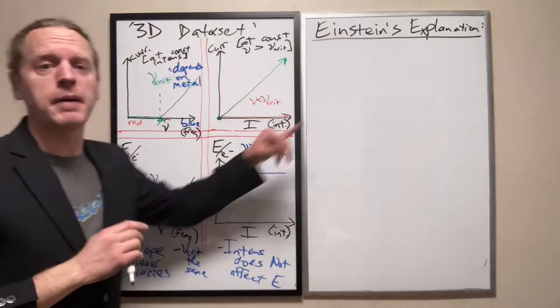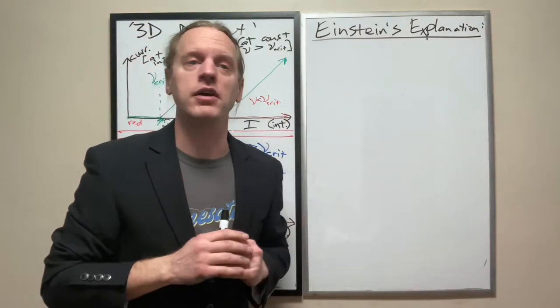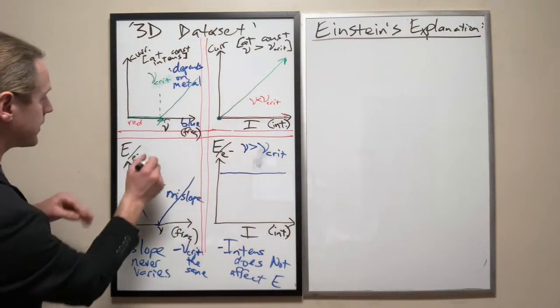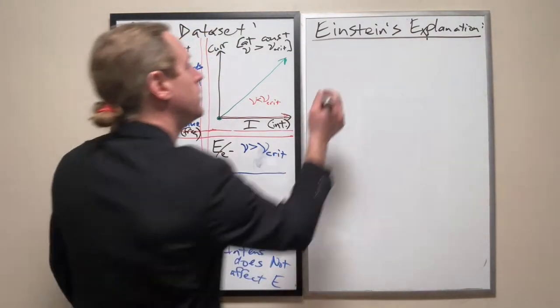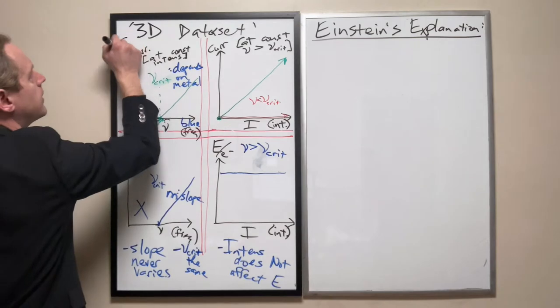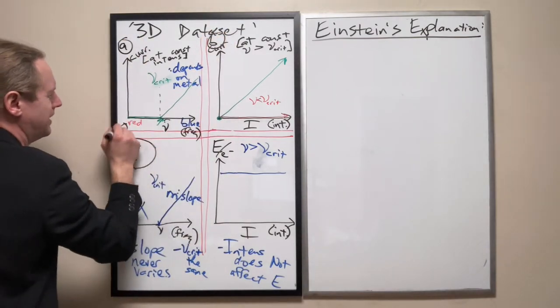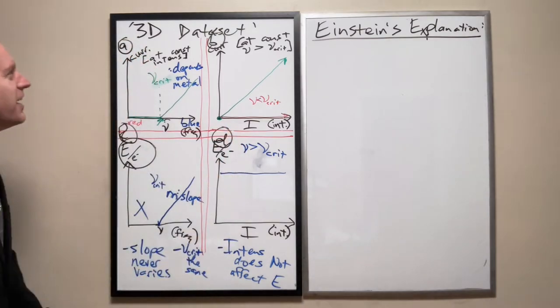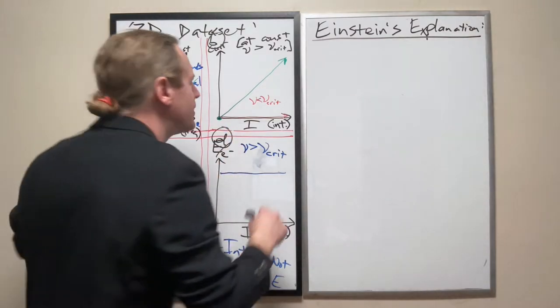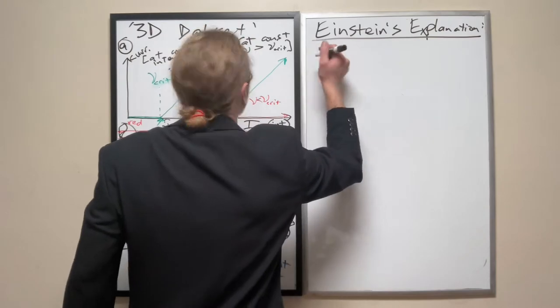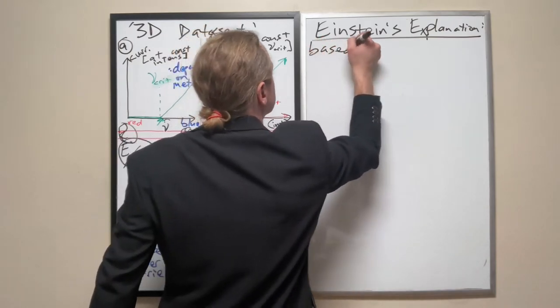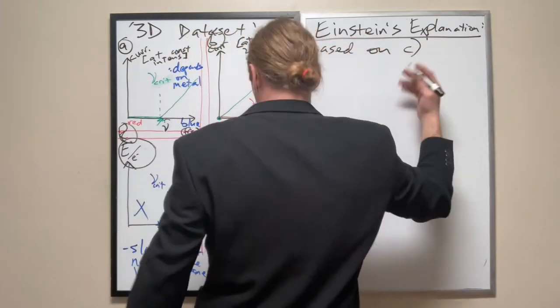So let's talk about exactly what assumptions he made. And first of all, I think this one is the one that we should start with. So let's call this A, B, C, and D.